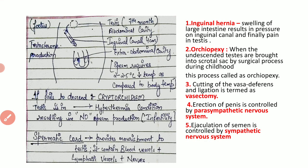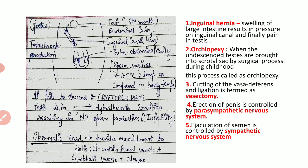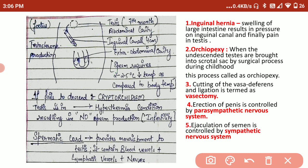An important point is why the scrotal sac is extra-abdominal rather than inside the abdomen. The temperature required for the formation of sperm is 2 to 2.5 degrees Celsius less than the body temperature. If the testis were kept inside the abdominal cavity, the sperms would not mature and there would be no motility, no proper sperm formation, and hence no fertilization.